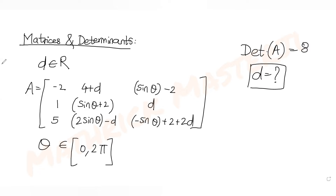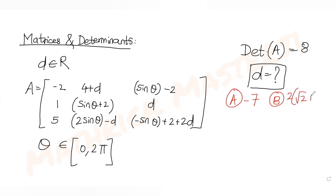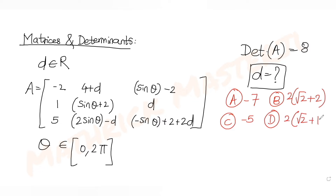The answer choices given are: A) -7, B) 2√2+2, C) -5, D) 2√2+1.